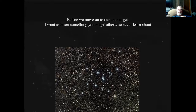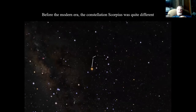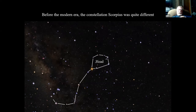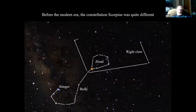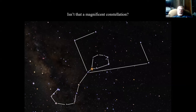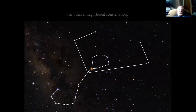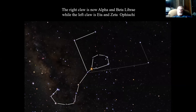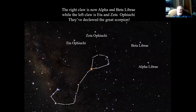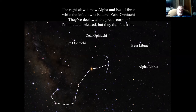He's inserting something here that otherwise you'd never learn about. Before the modern era, the constellation Scorpius was quite different — it had a head, body, right claw, and left claw. The right claw is alpha and beta Librae, while the left claw is eta and zeta Ophiuchi. They're declawed now — they don't show the claws anymore, and they don't show the odd-shaped head.